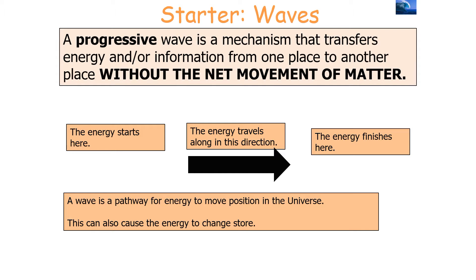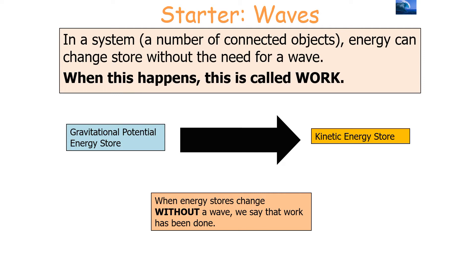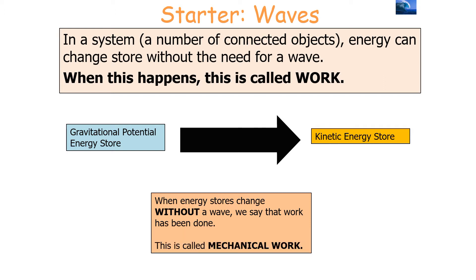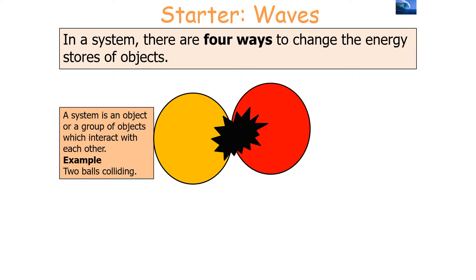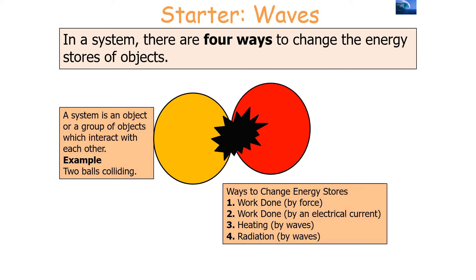When energy stores change without a wave, we say work is being done — mechanical work. In a system, there are four ways to change energy stores of objects. A system is an object or group of objects which interact with each other. The ways to change energy stores are: work done by a force, work done by an electrical current, heating via waves, or radiation via waves.